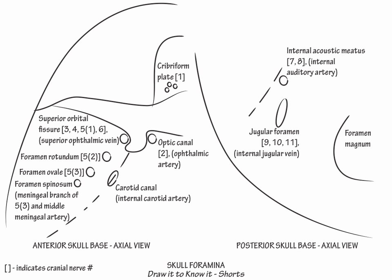Now along foramen magnum, label the hypoglossal canal, through which pass both cranial nerve 12 and a venous plexus.